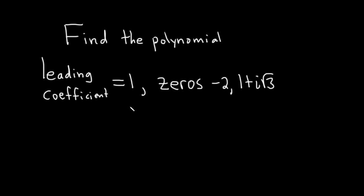Hi. In this problem, we're being asked to find the polynomial. We're being told that the leading coefficient is 1 and that it has zeros negative 2 and 1 plus i square root of 3.